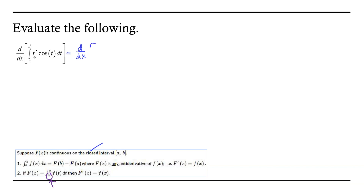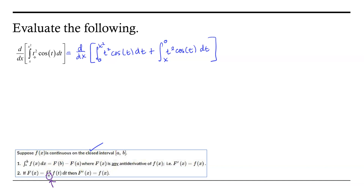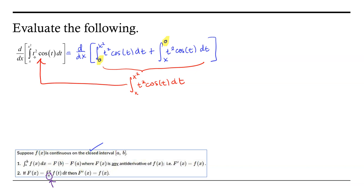The derivative with respect to x of the integral from 0 to x squared of t squared times cosine of t dt, plus the integral from x to 0, t squared cosine of t dt. By that property of definite integrals — when the lower limit of one matches the upper limit of the other and the integrands are identical — these combine to become the integral from x to x squared of t squared cosine of t dt, which is the function we want to differentiate.